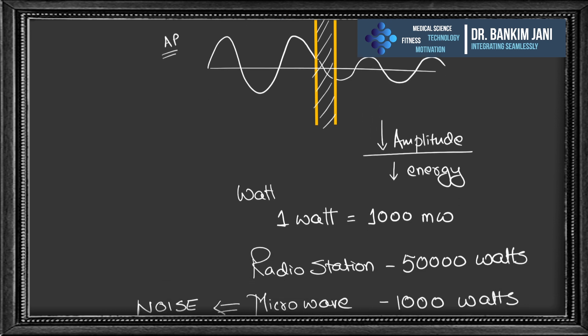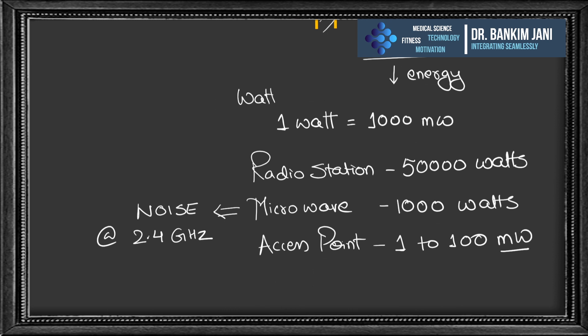This energy is measured in watts. Radio stations are about 50,000 watts; a microwave is 1,000 watts; but an access point is very low energy — just 1 to 100 milliwatts.